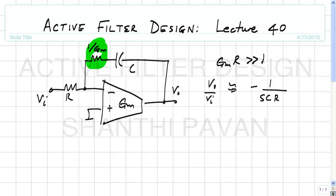Resuming from where we left off: the bottom line is to get as large a GM as possible. The differential pair has a swing problem — if you want input and output common modes to be equal, the swing is severely limited. So the next step is to improve swing using a folded cascode.